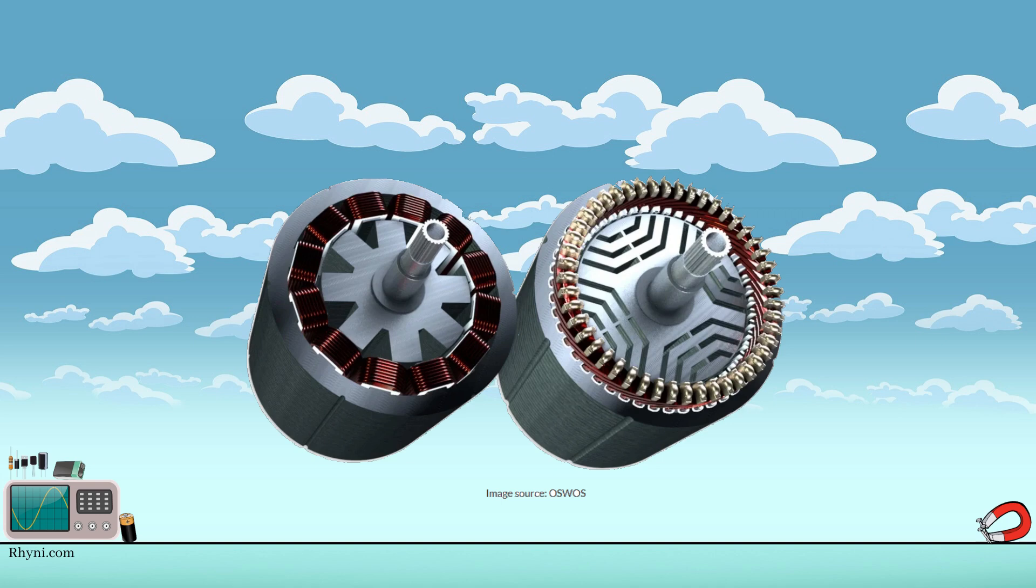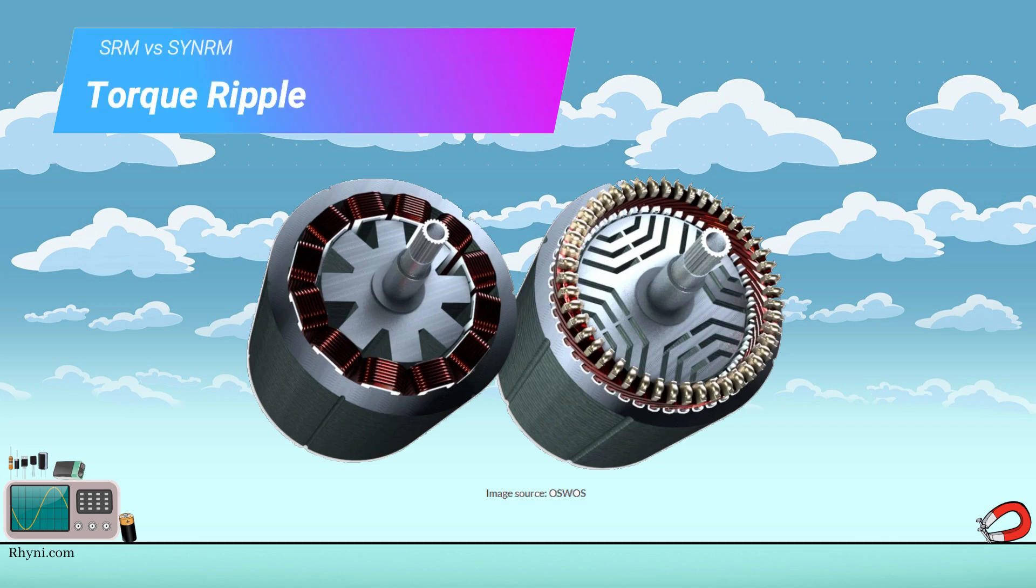Torque ripple. The switched reluctance motor has a higher torque ripple compared to the synchronous reluctance motor, making it less suitable for applications where a smooth torque output is required.